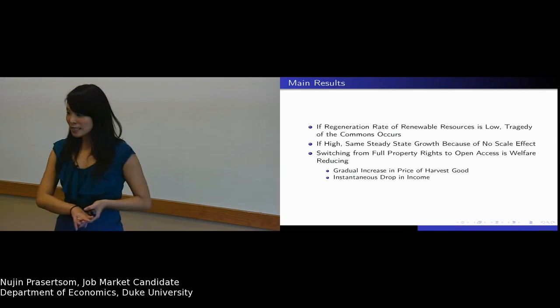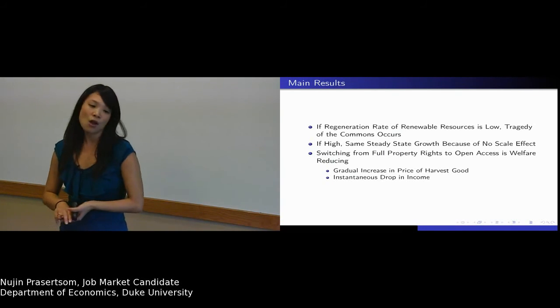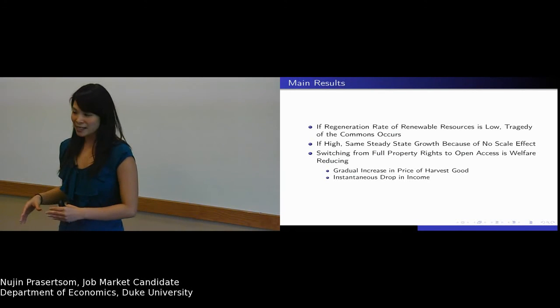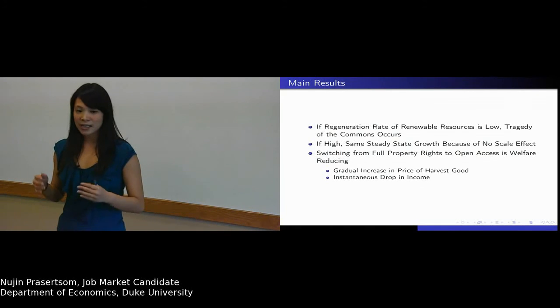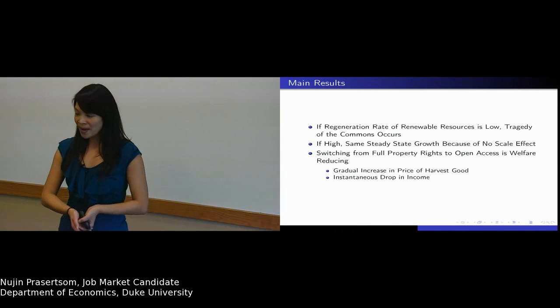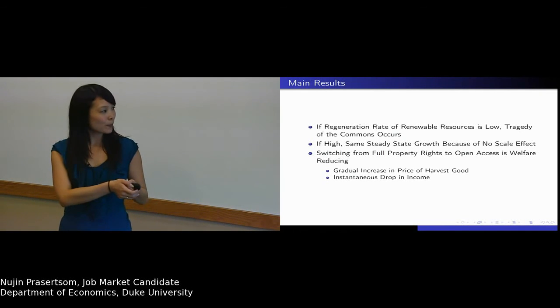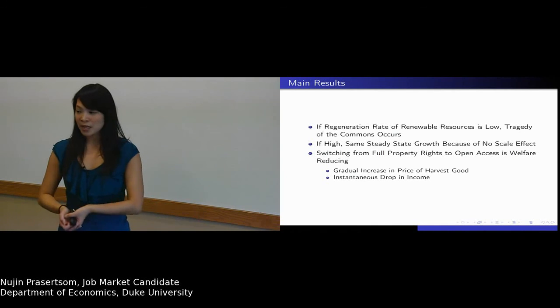The second one is through the instantaneous drop of the income. When you change from property right to open access, the resource income is eliminated because in open access, the rent dissipates to zero. That's why the income in the open access would be lower than the one in perfect property right.